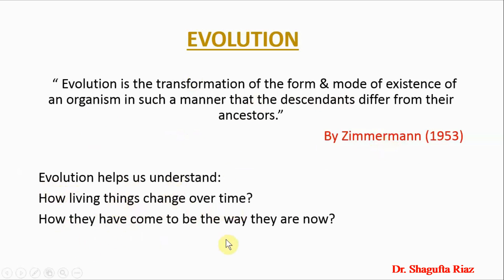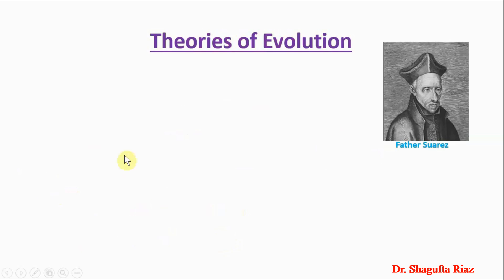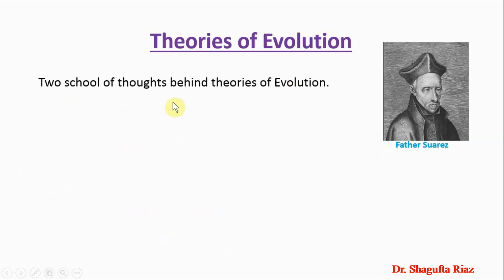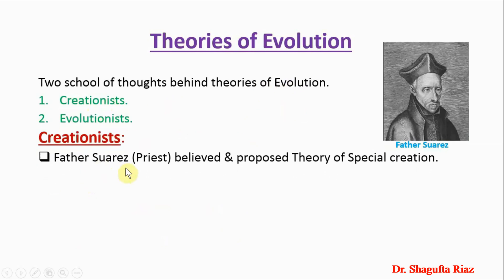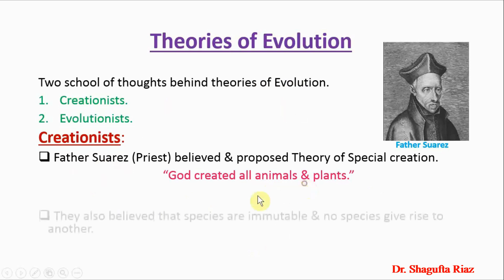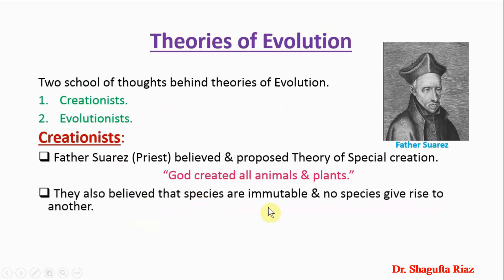There were theories put forward in favor of evolution, with two schools of thought behind them. The first were Creationists and the other Evolutionists. Creationists followed Father Suarez, who was a Spanish priest. He believed in and proposed the theory of Special Creation, according to which God created all animals and plants. They also believed that species are immutable and no species gives rise to another.